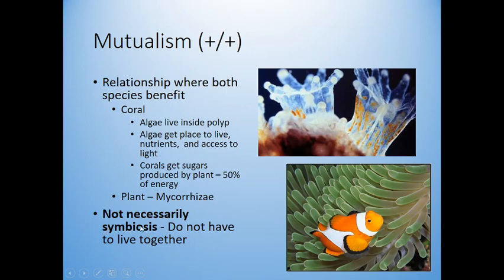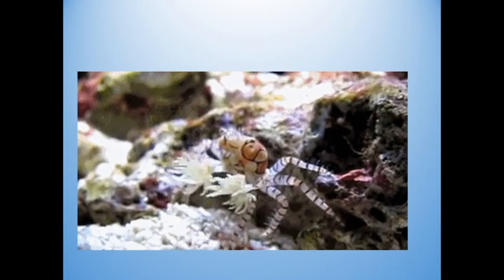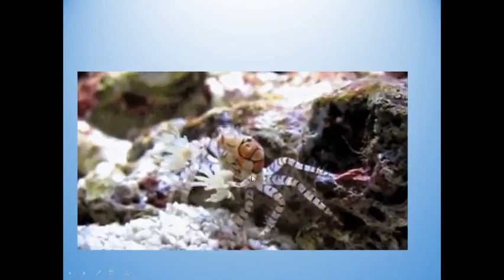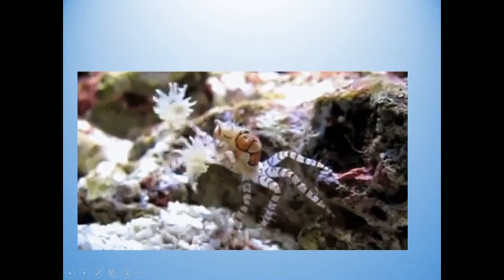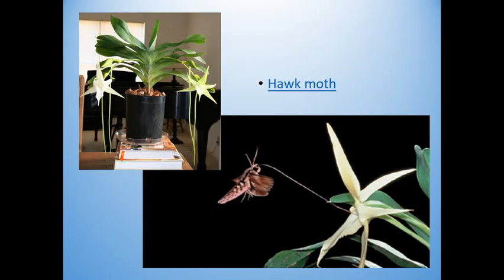The clownfish and sea anemone live together, but organisms don't have to live together to have mutualism. My favorite is the pom-pom crab — a little crab that puts sea anemones on its claws and waves them around for protection. Another example is pollinating insects or birds, like this moth that inserts its really long tongue all the way down an orchid to reach nectar, and while doing so, pollinates the plant.